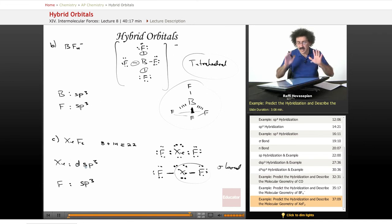So that's it. It's just a question of how many objects you have around a central atom. The number of objects will actually tell you what kind of hybridization you have.